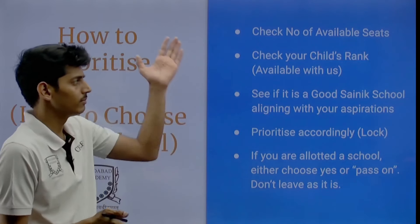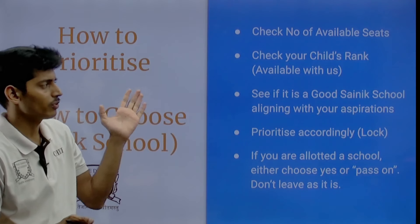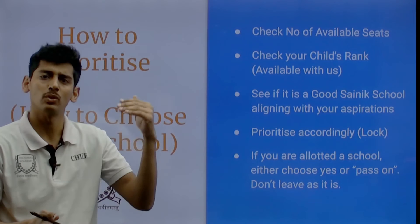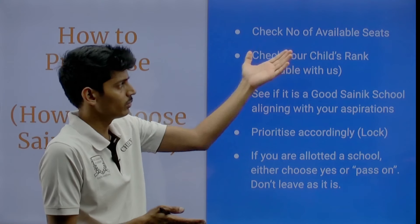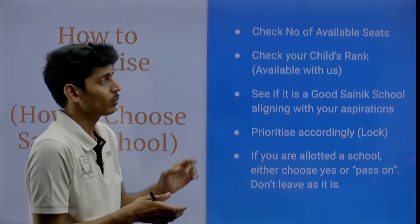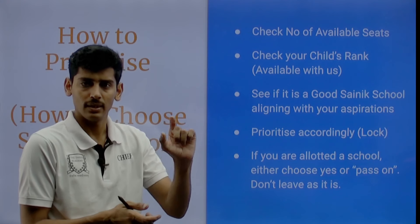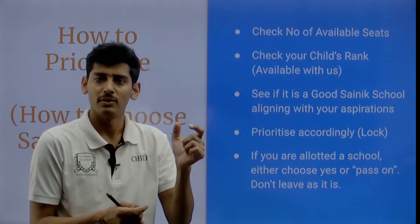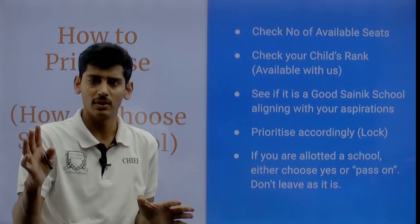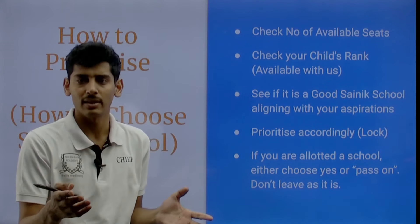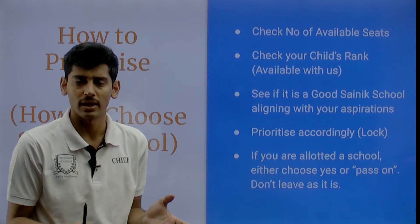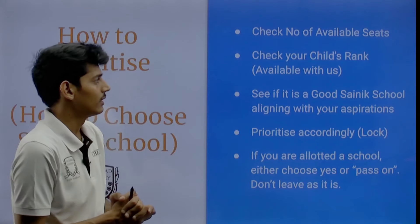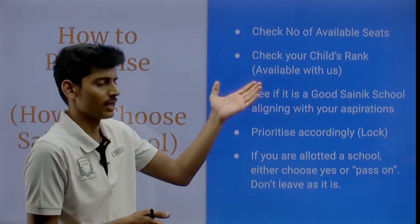While prioritizing, you need to see what is the number of available seats. If the number of seats is really good in a given category - let's suppose 10 seats are still pending in general category - but if your child's marks are not up to mark, then it's not worth it. So you have to check your child's rank.